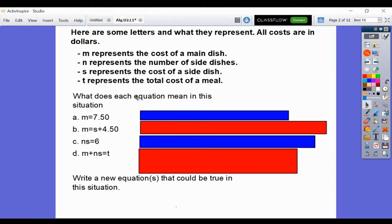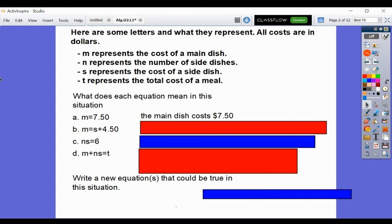It says, what does each equation mean in this situation? So the first one we have is M equals 7.50, which we know is talking about M is the main dish, and it's talking about the cost, which is $7.50.